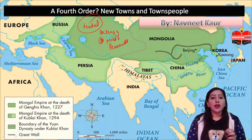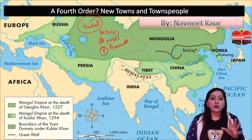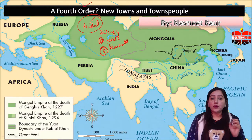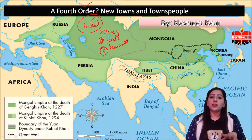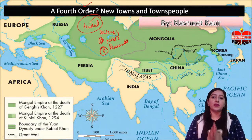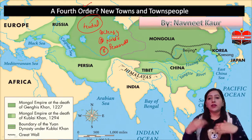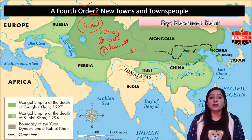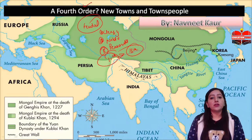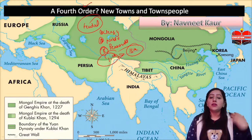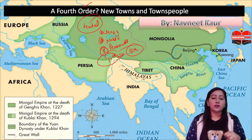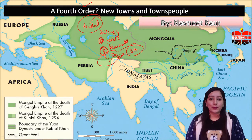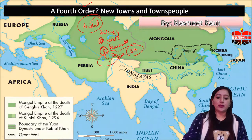There was no fourth order in the hierarchy we have seen. Now we will cover new towns and new town people that emerged in the 13th century. However, after the 11th century there was a trend here of new towns and town people. So let's start the topic.